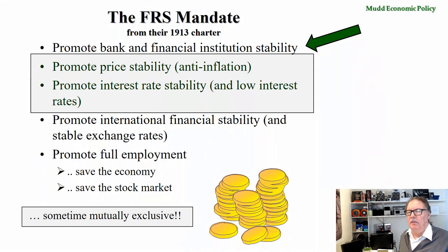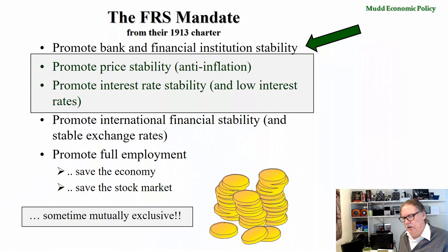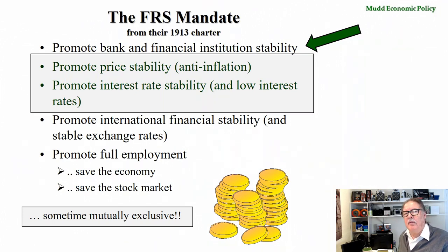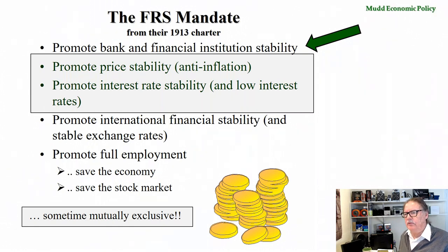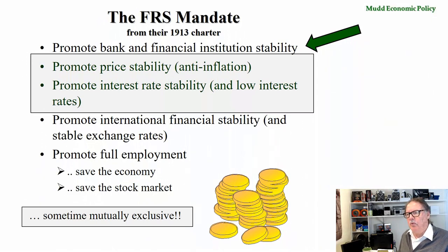Initially, the Federal Reserve System wasn't all that successful at keeping banks alive, because in 1930, during the Great Depression, one third of all banks failed despite the activities of the Federal Reserve System, and another third were absorbed by the largest banks in the so-called banking holiday of 1932. The conditions that set this in motion came from the stock market crash of 1929, and went through 1930, '31, and '32.